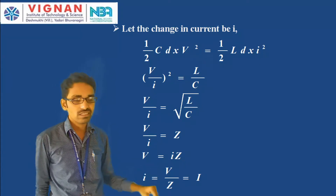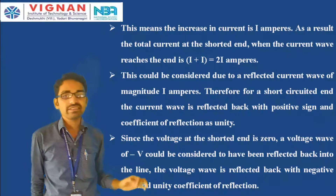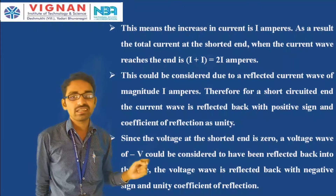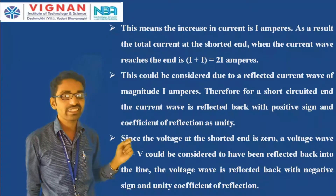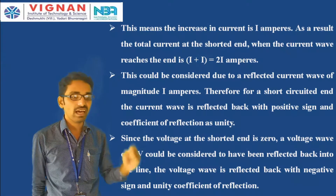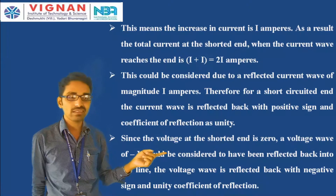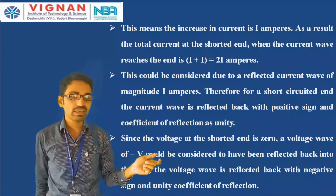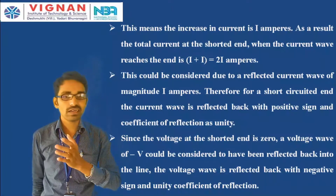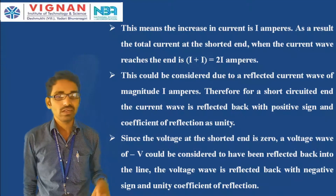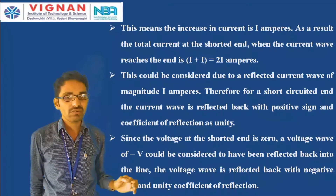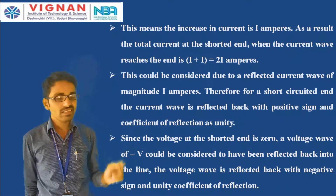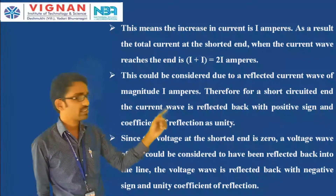This means the increase in current is I amperes. As a result, the total current at the shorted end when the current wave reaches the end is I, and there is a reflection of that current back with positive sign. So the incident wave is I and the reflected current is also I, giving a total of I + I = 2I amperes. This is considered due to the reflection of a current wave of magnitude I.